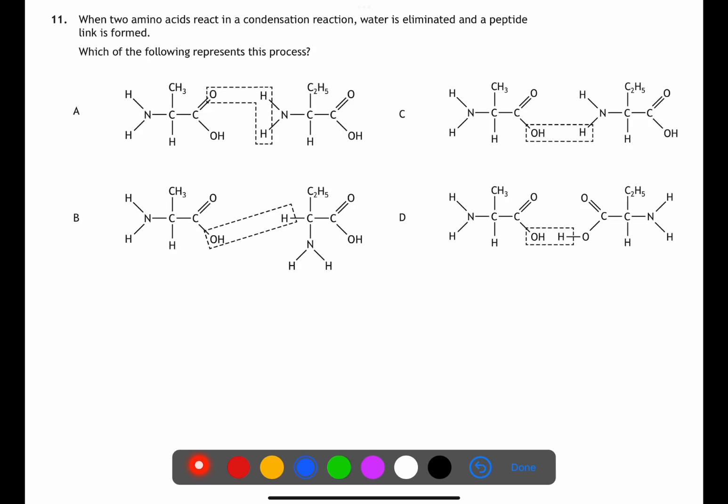In question 11 we're looking at what happens when two amino acids react in a condensation reaction to form a peptide link. To do this we lose the OH group from the carboxyl side and we lose one of the hydrogens from the amino side.